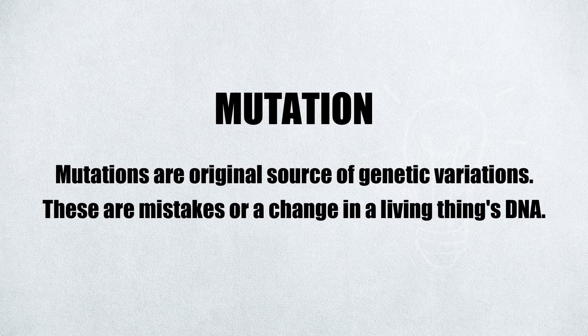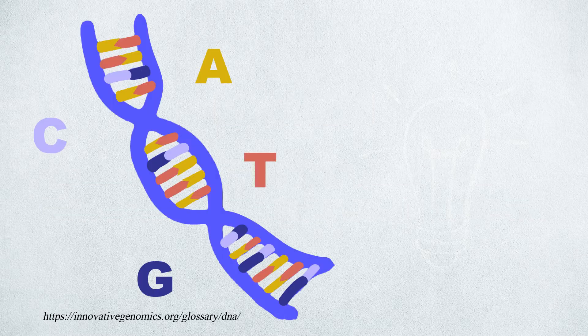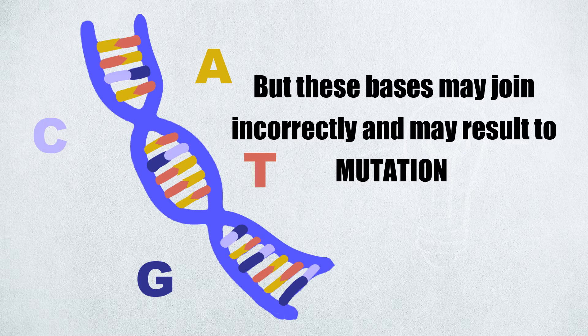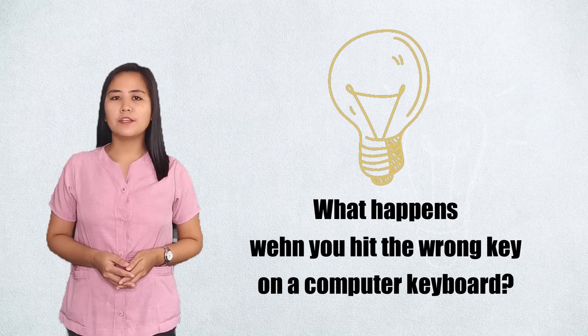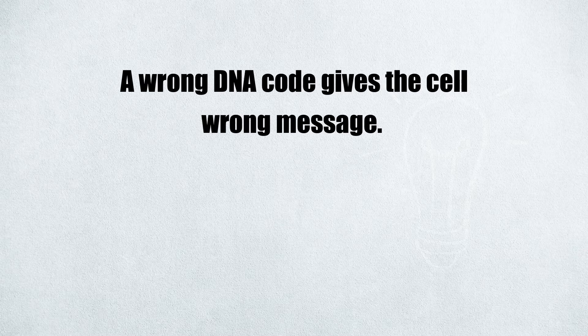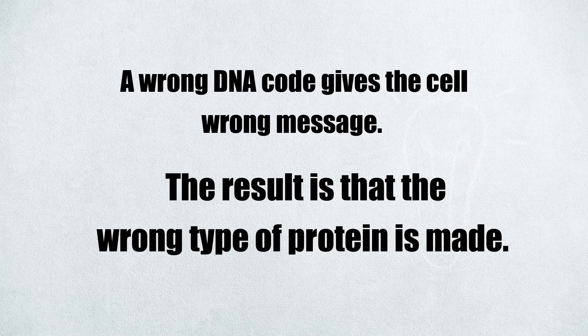In lesson 2, you have learned that DNA is arranged in a particular sequence or order. Base A joins only with base T and base C joins only with base G. But these bases may join incorrectly, and this may result in mutation. Think about this: what happens if you hit the wrong key on the computer keyboard? Doesn't the computer get the wrong message? Cells are like the computer — a wrong DNA code gives the cell the wrong message, and the result is that the wrong type of protein is made.